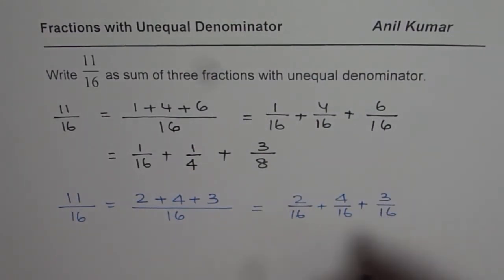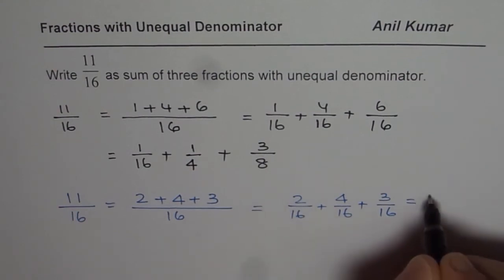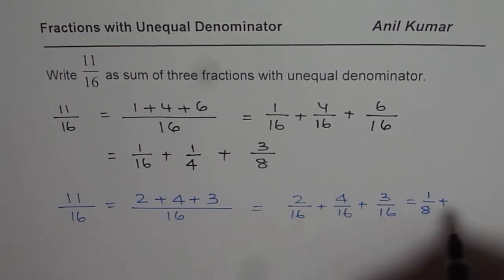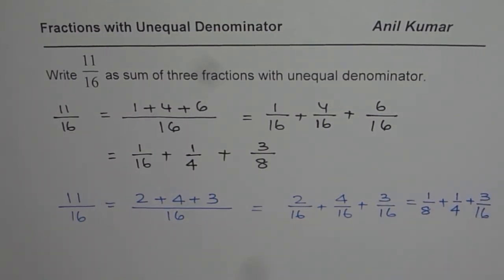And I can simplify this. 2 over 16 could be written as 1 over 8. And this, if I simplify, dividing both by 4, what do I get? I get 1 over 4, and this one is 3 over 16. Do you see that? So that's another way of writing the same thing as combination of three fractions with different denominators.